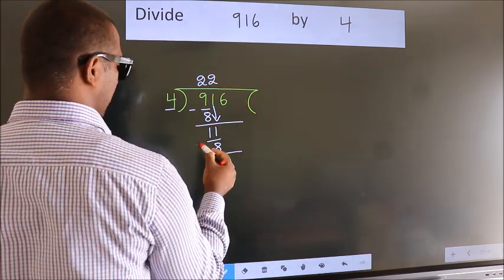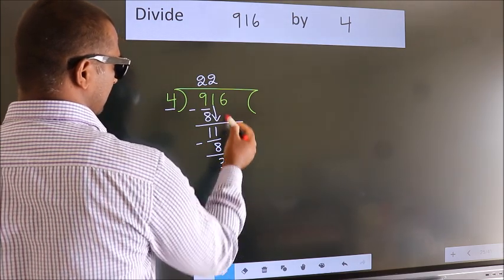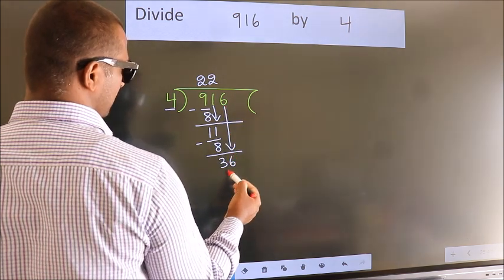Now we subtract. We get 3. After this, bring down the beside number. So 6 down. So 36.